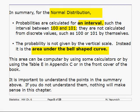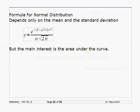To find these areas, these probabilities, some computers will do it for you, or you can use table E in appendix C, which is also reprinted on the front cover of the textbook. There is a formula — actually a fairly simple formula — for calculating all of those bell-shaped curves. All you need is the mean and standard deviation. The formula is: e raised to the power of negative (x minus mu) squared divided by 2 sigma squared, all divided by sigma times the square root of 2 pi. If you calculate all those values of x from about 2 or 3 standard deviations below the mean to 3 above, you'll trace out your bell-shaped curve. The main interest isn't the curve itself — it's the area beneath it.